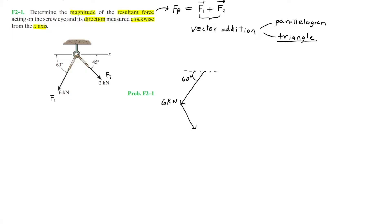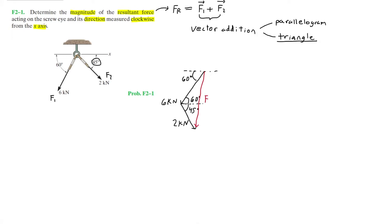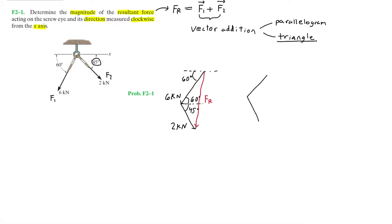From the head of F1 we draw F2 at 2 kilonewtons. Here we have the alternate interior angle for F1 at 60 degrees, then underneath it the 45 degrees, and the resultant force. Since we are given the magnitudes and directions of the forces, we know two side lengths of this triangle and we're trying to find the third, which is FR. By adding 60 degrees and 45 degrees we get 105 degrees.